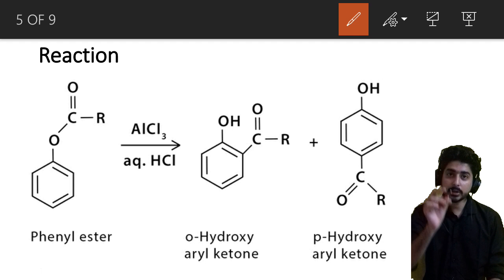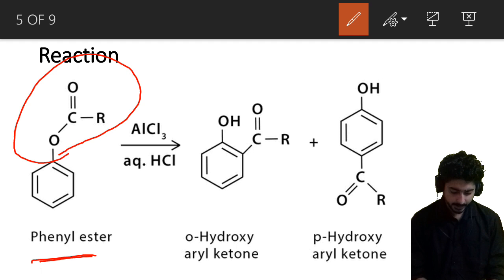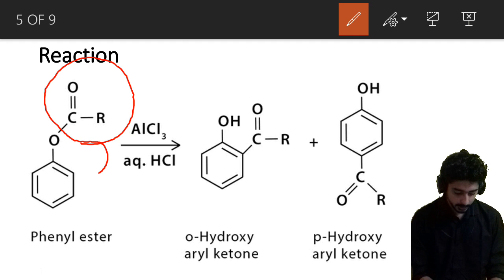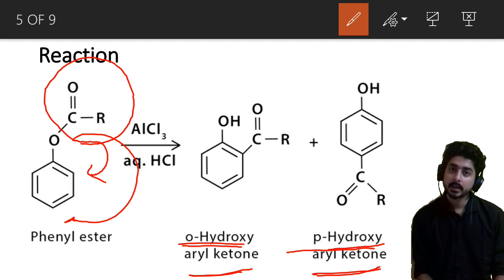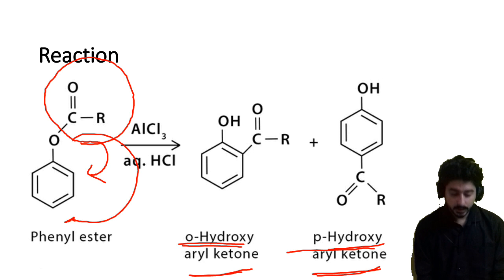To see how the Fries rearrangement works, we use phenyl ester — which has the group R-O-C(=O)-R — as the starting material. As a catalyst we use AlCl3 and aqueous HCl, a Lewis acid. The acyl group attaches to either the ortho or the para position, giving two products: ortho-hydroxy aryl ketone and para-hydroxy aryl ketone. The proton also helps in the reaction.